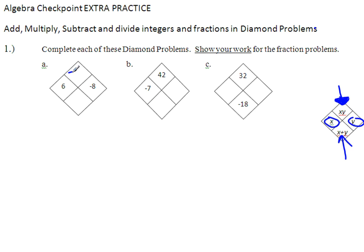So six times negative eight, negative 48. Keep in mind, you will not have a calculator for this, so make sure you know your multiplication facts. And six plus negative eight is negative two.